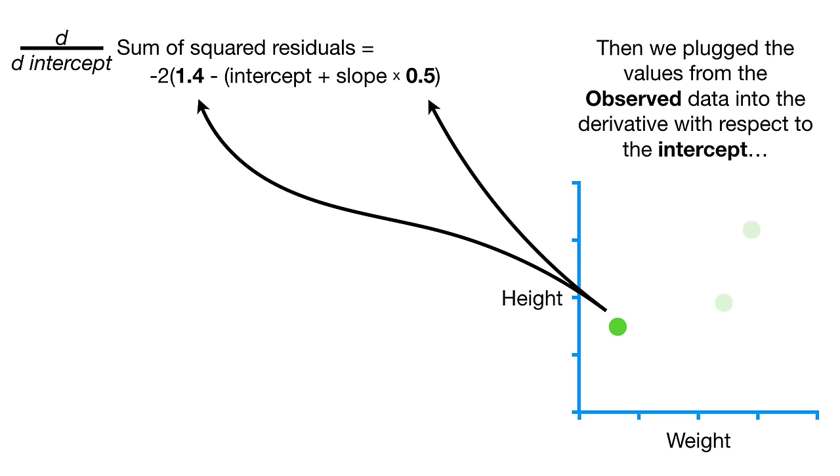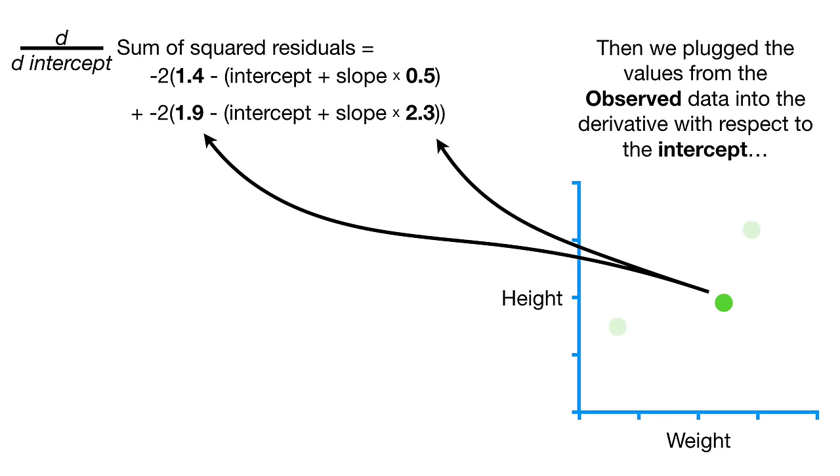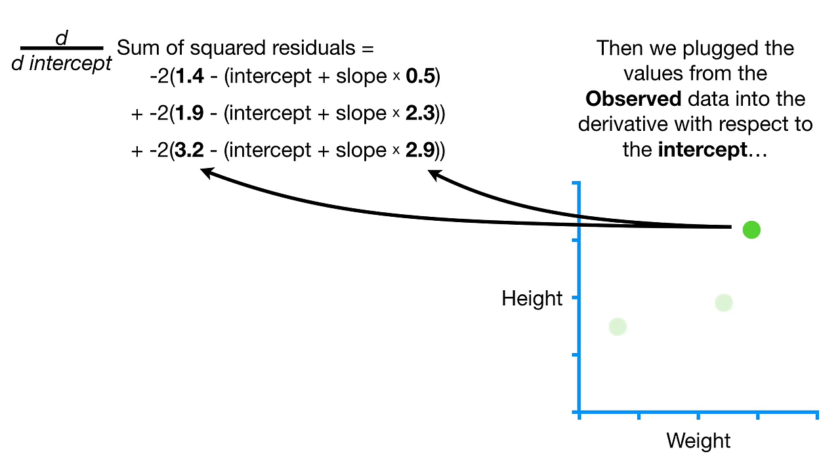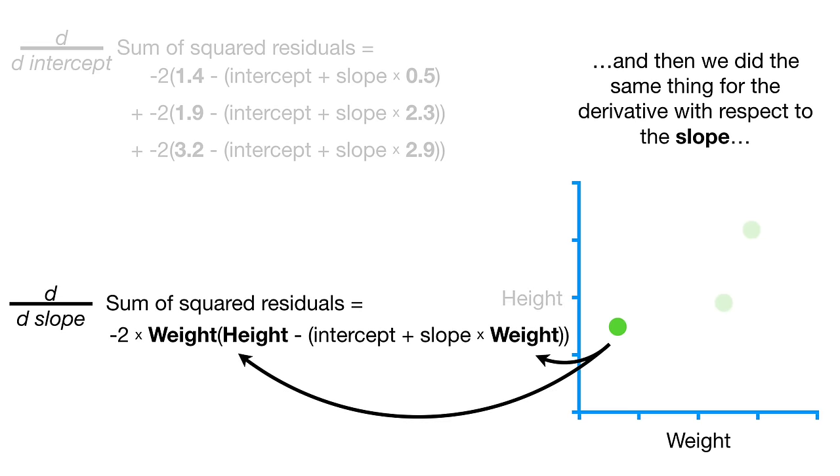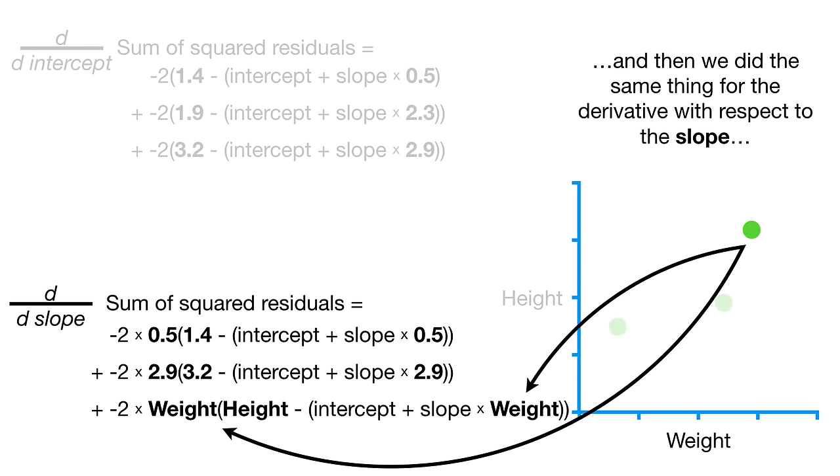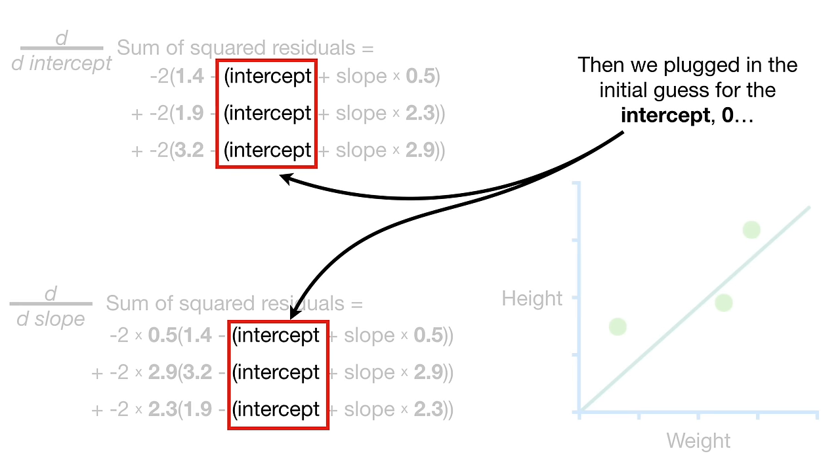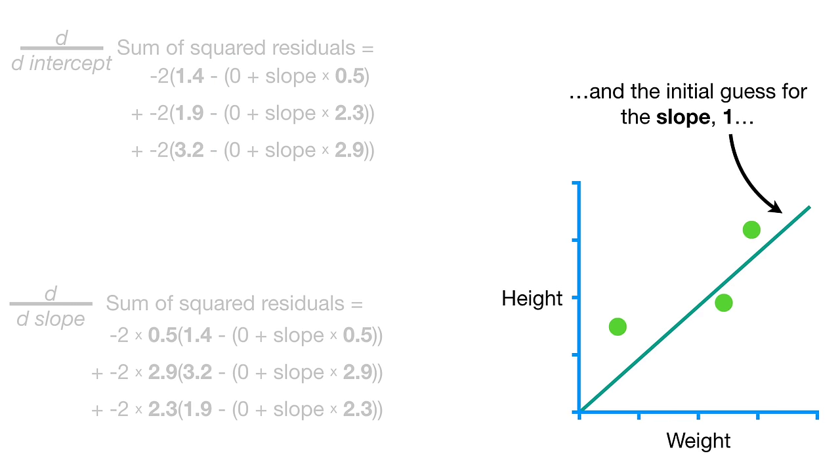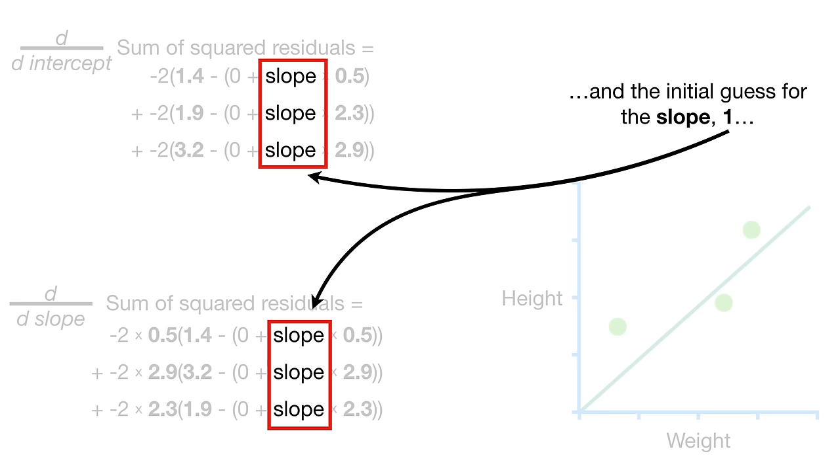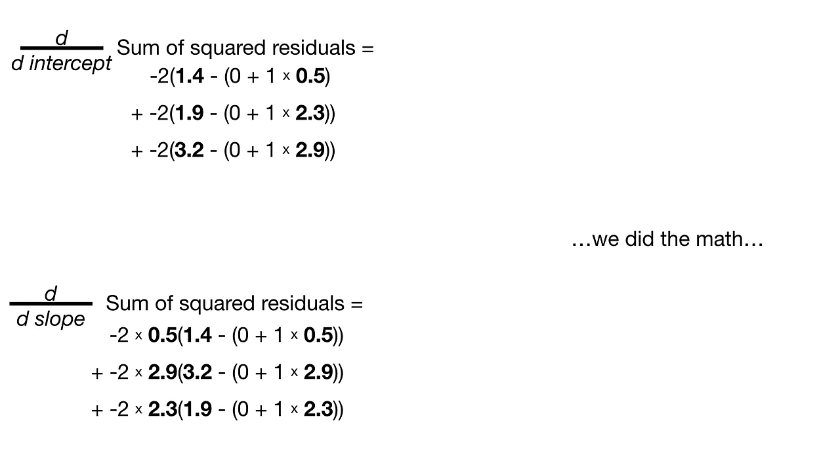Note, the sum of the squared residuals is just one of many different loss functions that can evaluate how well something fits the data. In this case, that something is a line. To find the optimal values for the intercept and slope, we plugged the equation for the predicted height into the sum of the squared residuals.